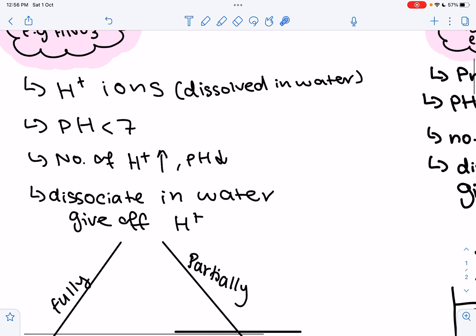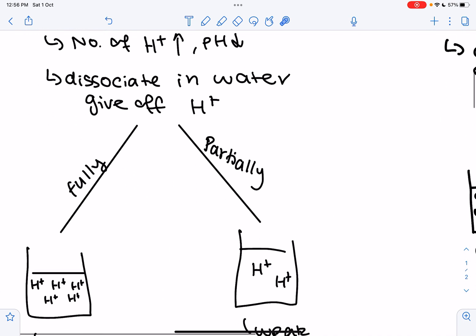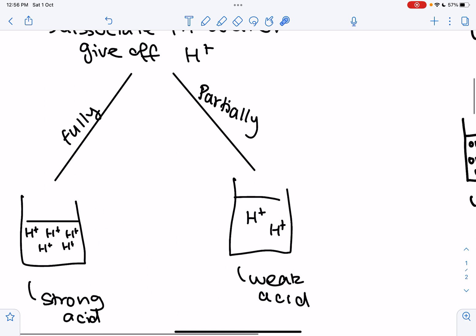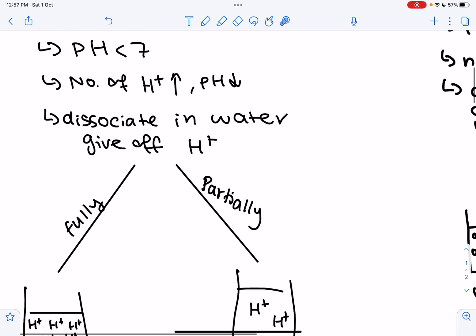So acids dissociate in water to give off H plus ions. As you can see, they can fully dissociate, which gives a strong acid such as HCl, hydrochloric acid, or H2SO4, sulfuric acid. Or they can also partially dissociate, which gives you a weak acid such as H2CO3. Another thing to take note of is as the number of H plus increases, the pH goes down, which means the acid gets stronger.